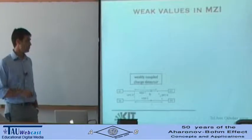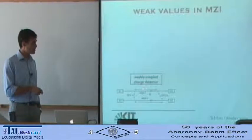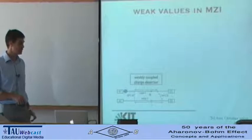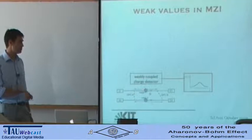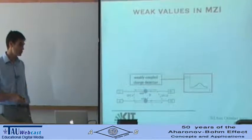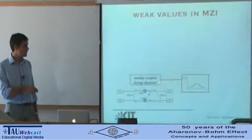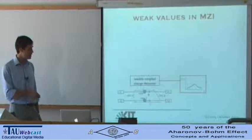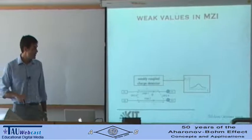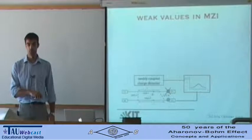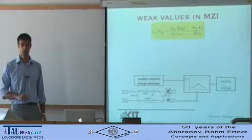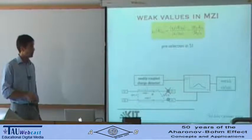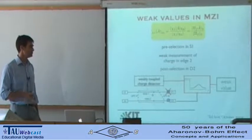How do you implement the protocol for measuring the weak value? Our proposal is to make a weak measurement of the charge in one of the edges. The protocol is quite natural: you inject electrons only from source one, then because of scattering it splits into a coherent superposition of electrons going around the two arms. If you have a weakly coupled charge detector — meaning it gives a wide distribution when measuring many times — you detect the charge in this part of the sample.